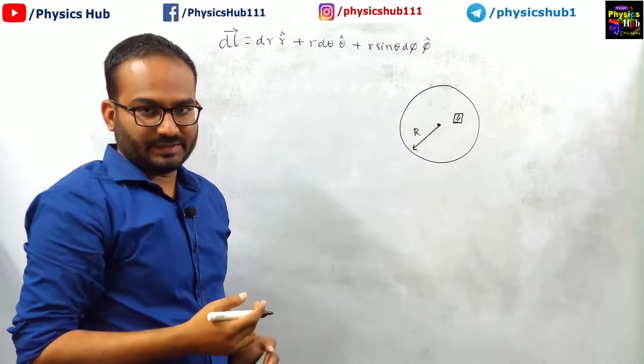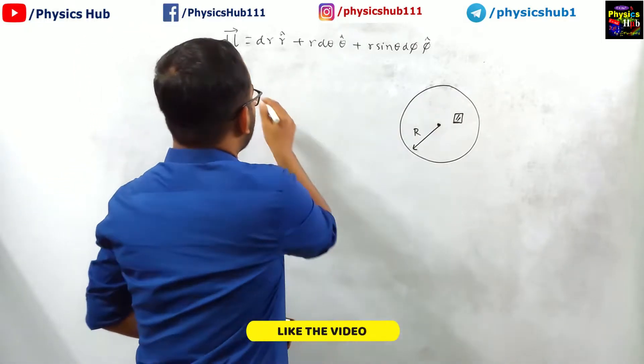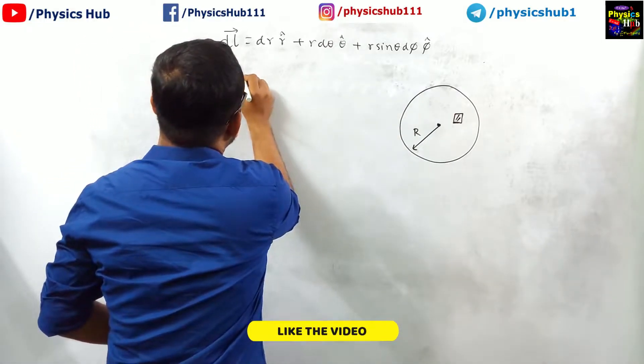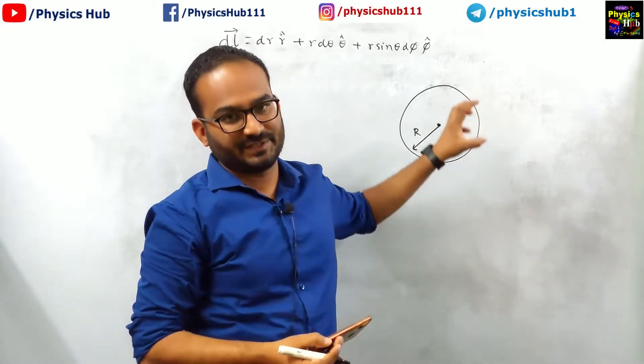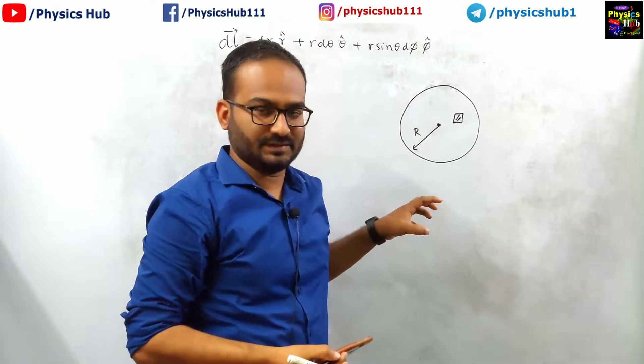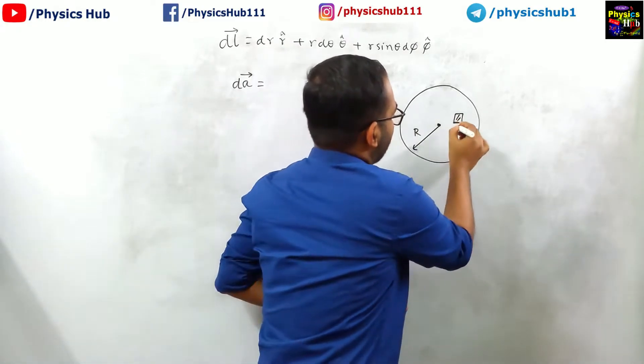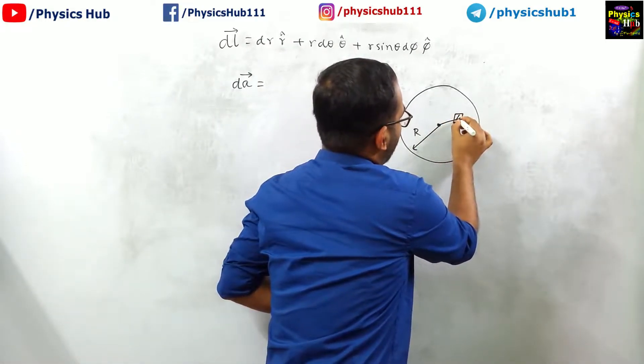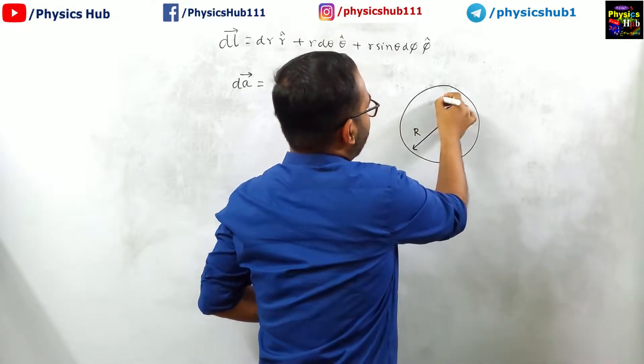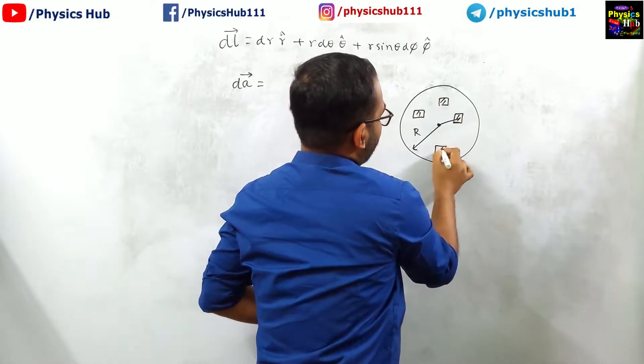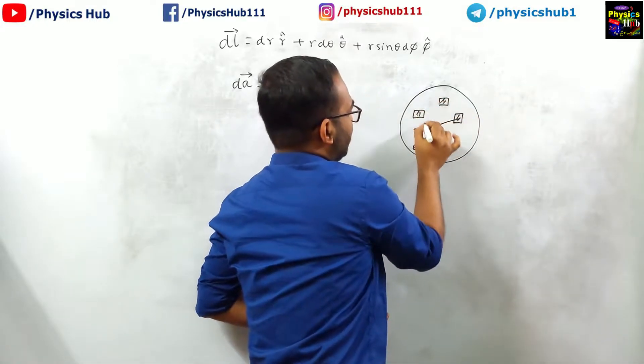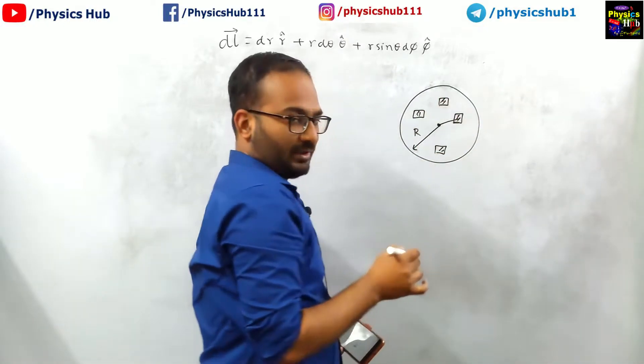How can you calculate the surface element? We will write dA. We have to see which quantity is fixed over this surface. If you consider the surface is lying here or here or here, at each and every infinitesimal surface, what is fixed?